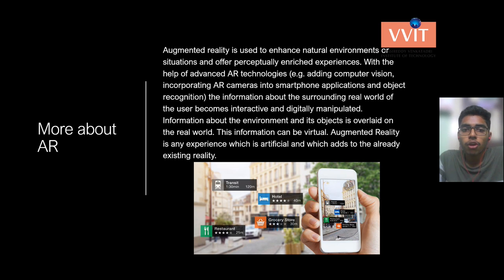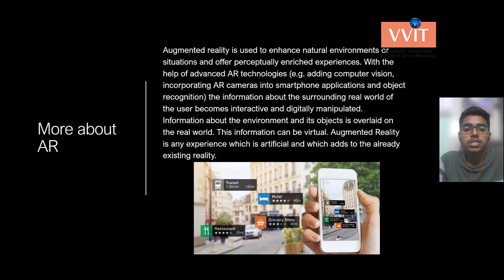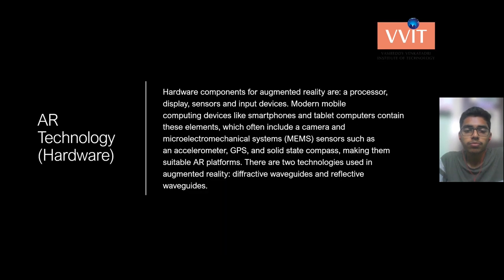Augmented reality is used to enhance natural environments and offer perceptually enriched experiences. With advanced AR technologies, information about the surrounding real world becomes interactive and digitally manipulable, overlaid on the real world. The hardware components for augmented reality are a processor, sensors, display, and input devices. Modern mobile computing devices like smartphones and tablets contain these elements, including cameras and MEMS sensors such as accelerometers, GPS, and solid-state compass, making them suitable AR platforms. There are two main display technologies in augmented reality: diffractive waveguides and reflective waveguides.